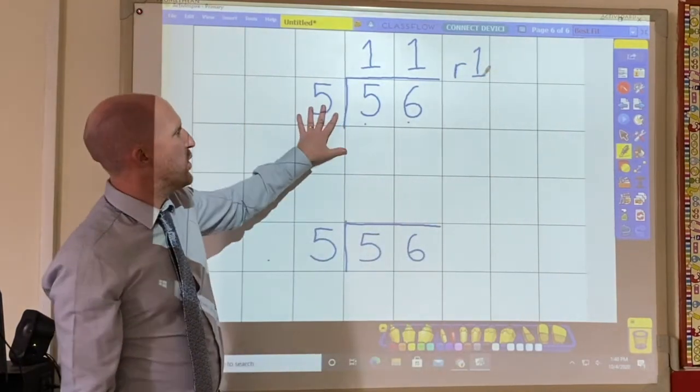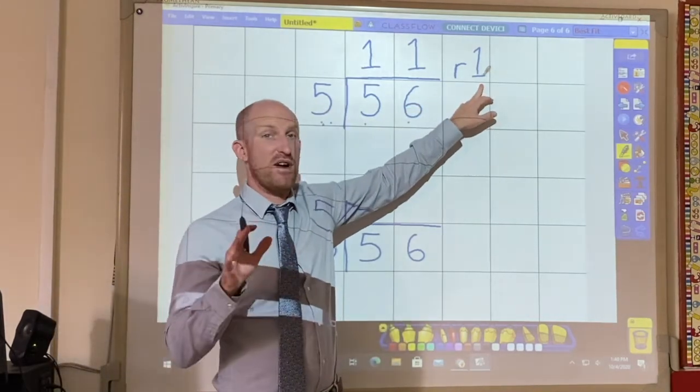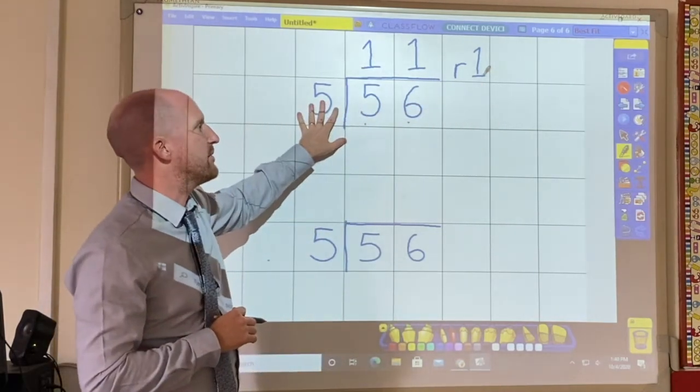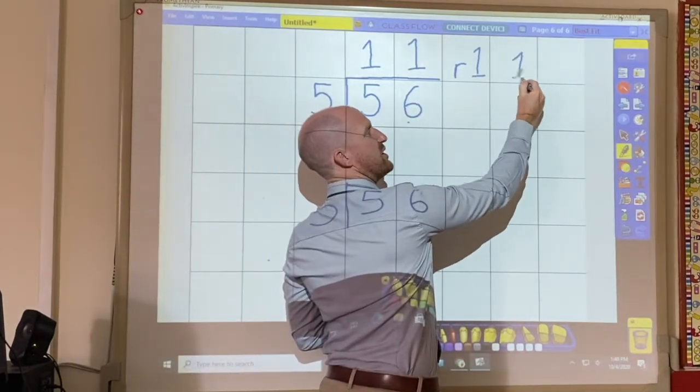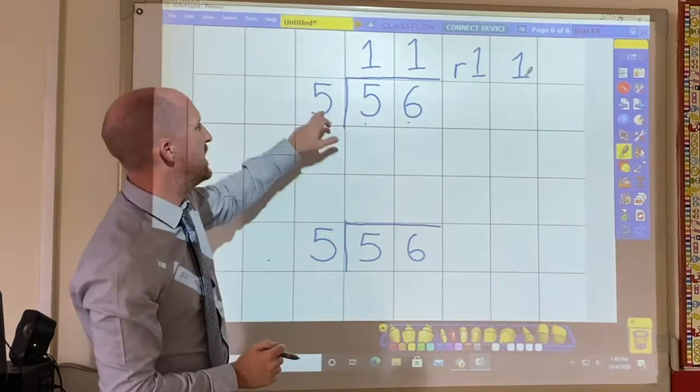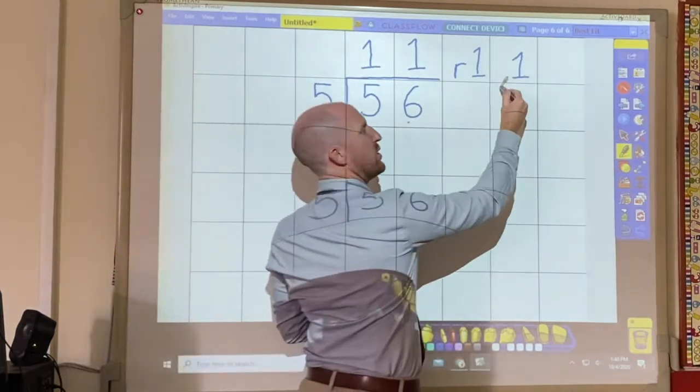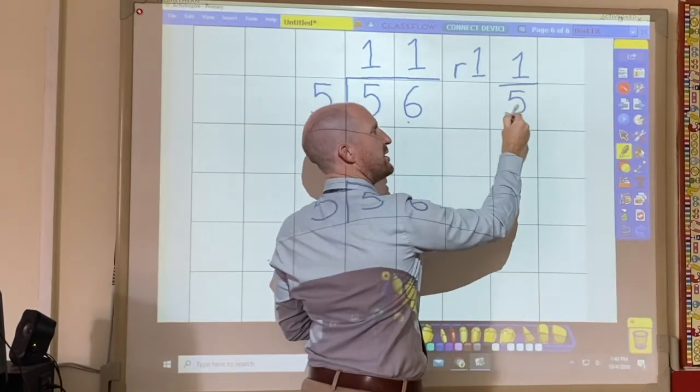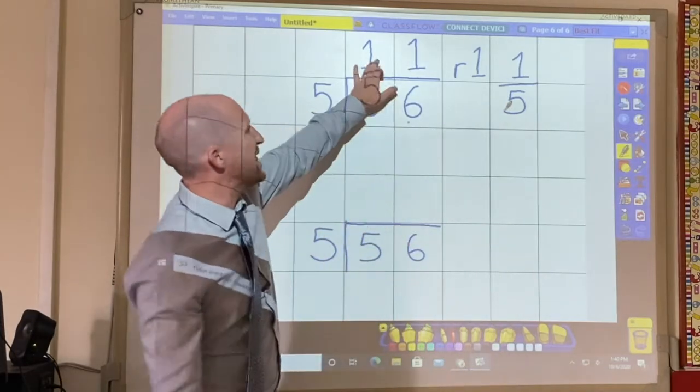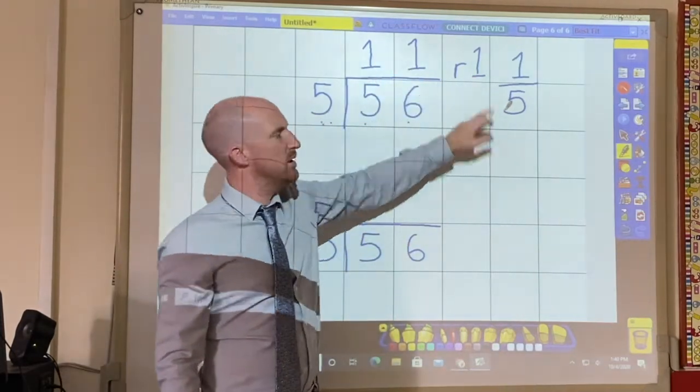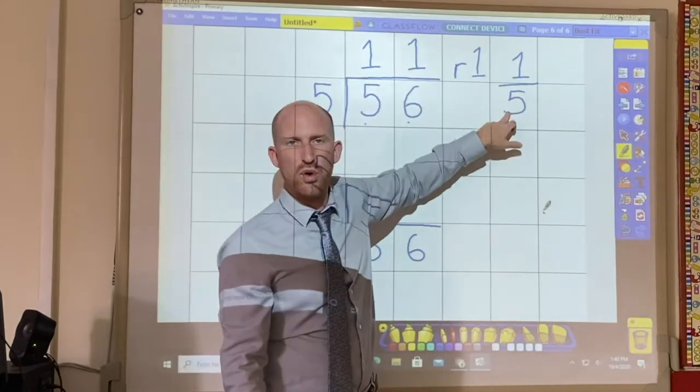Now to work out what the remainder is as a fraction, this is how we do it. This remainder goes at the top of the fraction and becomes the numerator. And then the number that you are dividing by goes at the bottom of the fraction and becomes the denominator. So can you see how 11 remainder 1 has now changed into 11 and 1/5.